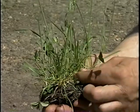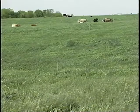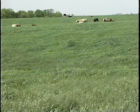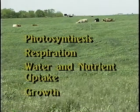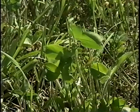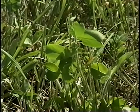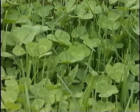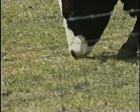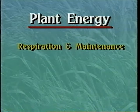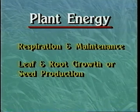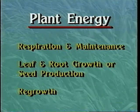Each plant in the pasture grows as an individual plant, responding to the environmental conditions around it. Among the most basic processes of the plant are photosynthesis, respiration, water and nutrient uptake, and growth. A plant generates its energy by converting sunlight to plant-usable carbohydrate energy in its leaf area. Generally, the more leaf area the plant has, the more efficiently it can accumulate energy. Closely grazed plants, or pastures with low plant density, are less efficient at capturing available sunlight. Plants first use their energy for respiration and basic maintenance functions. Energy is then used for leaf and root growth or seed production. Any excess carbohydrates which accumulate are available for regrowth.